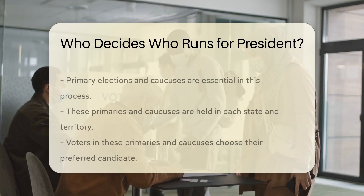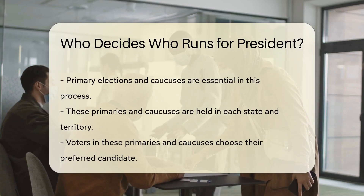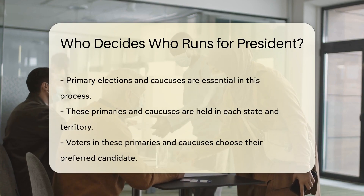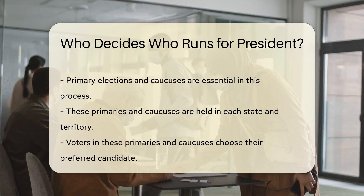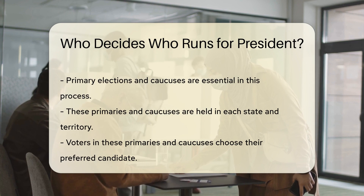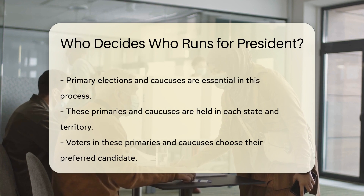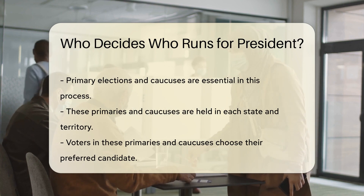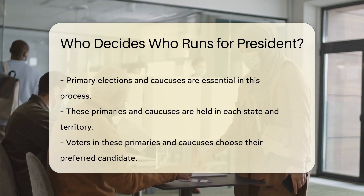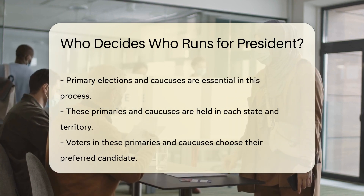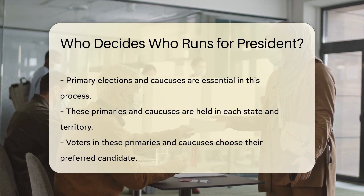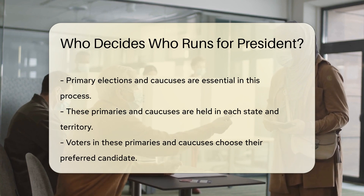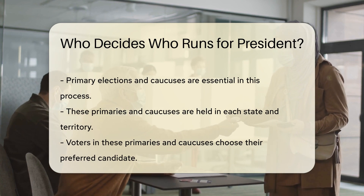The primary elections and caucuses are crucial in this process. These are held in each state and territory. Voters in these primaries and caucuses choose their preferred candidate, and the results determine how many delegates each candidate receives.